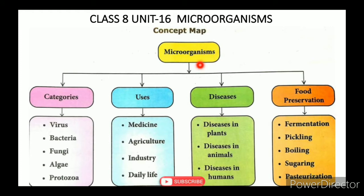Concept Map — Microorganisms. இந்த lesson-ல உங்களுக்கு total 9 topics கொடுத்திருக்காங்க. Microorganisms என்பது மிகச் சிறியதாக இருக்கும். இதை நமக்கு வெறும் கண்களால் பார்க்க முடியாது — microscope வைச்சுதான் பார்க்க முடியும். இதை microorganisms என்றும் சொல்லா, microbes என்றும் சொல்லா. (In this lesson 9 topics are given. Microorganisms are very small — they cannot be seen with the naked eye, only through a microscope. They are also called microbes.)